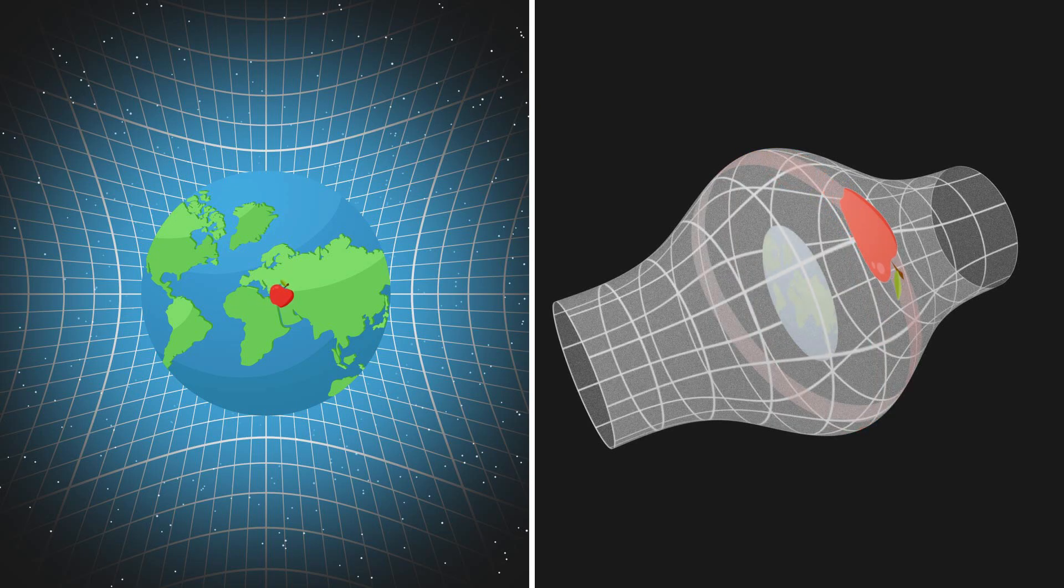If we give the object a gentle nudge to the right, it would start to move slowly in that direction. On the spacetime diagram, this would cause the object's path to tilt slightly to the right. The object would then follow a great circle on the spacetime surface, inclined to the equator, similar to the ecliptic on a globe.